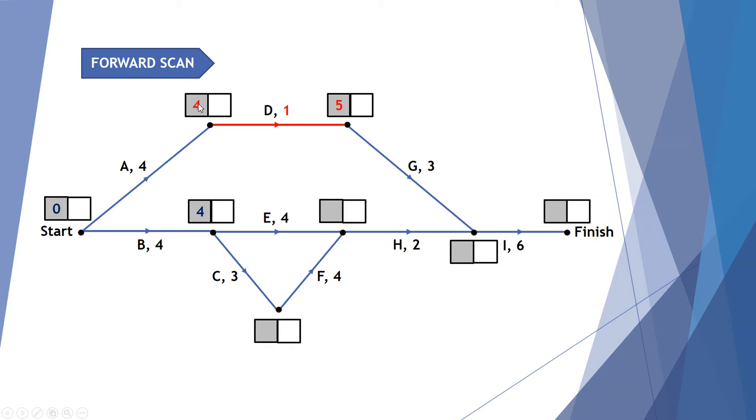At the end of activity A, activity D takes one. So four plus one gives me five weeks. At the end of activity B after four weeks, activity C takes three. So four plus three gives me seven weeks. And then seven plus activity F is four. So seven plus four gives me eleven.